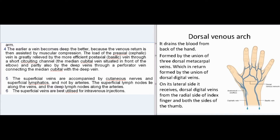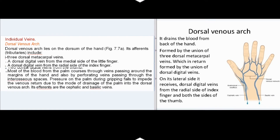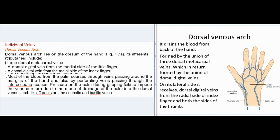The dorsal venous arch lies on the dorsum of the hand. Its tributaries include three dorsal metacarpal veins, a dorsal digital vein from the medial side of the little finger, a dorsal digital vein from the radial side of the index finger, and two dorsal digital veins from the thumb. Most blood from the palm courses through veins passing around the margins of the hand and by perforating veins through the interosseous spaces; pressure on the palm during gripping does not impede venous return. Its efferents are the cephalic and basilic veins.